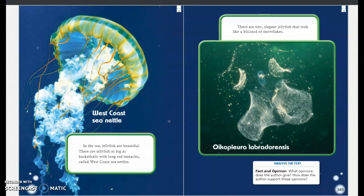In the sea, jellyfish are beautiful. They are jellyfish as big as basketballs with long red tentacles called West Coast sea nettles. There are tiny, elegant jellyfish that look like a blizzard of snowflakes. This is the Ocoplura labradoransis.